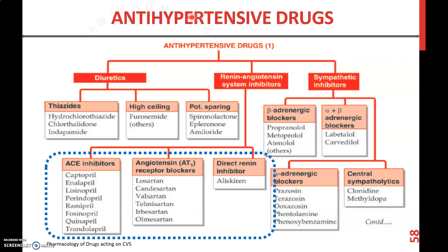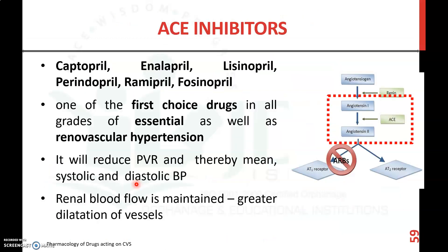We are discussing anti-hypertensive drugs. In the previous Part 1 video, we discussed the introduction to hypertension and the renin-angiotensin mechanism. In Part 2, we discussed the classification and pharmacology of diuretics. Here, we will discuss drugs acting on the renin-angiotensin system — specifically ACE inhibitors, angiotensin receptor blockers, and direct renin inhibitors. Let us start with ACE inhibitors.